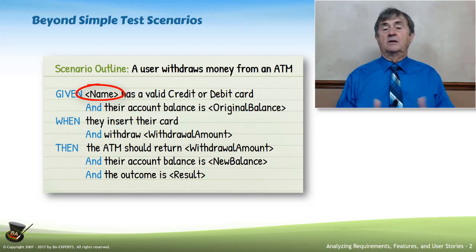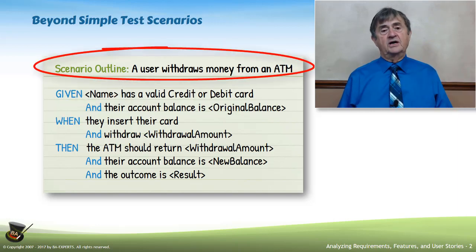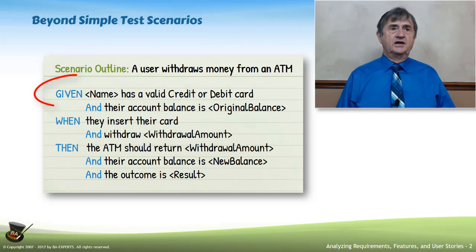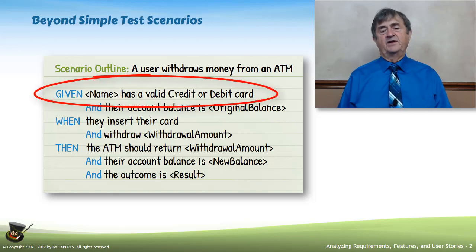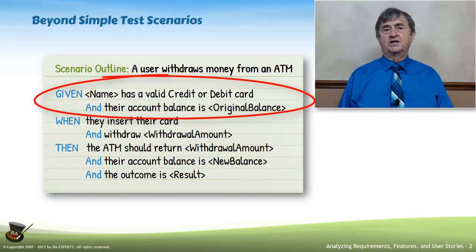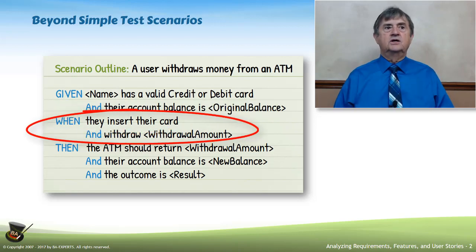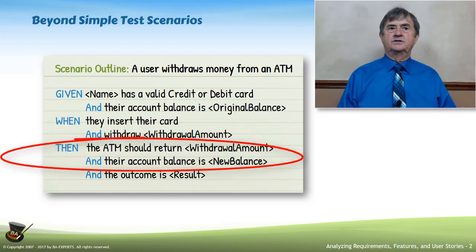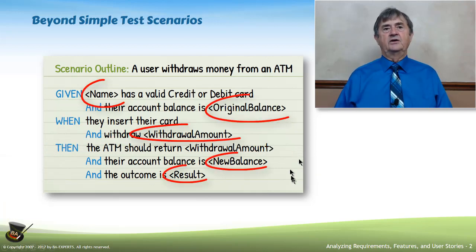So instead of talking about Fred, we would talk about 'student.' And then we could have, in an example table, a bunch of students — each with different criteria that test different dimensions of the application. A very common scenario outline most people can relate to: a user withdraws money from an ATM. Given <name> has a valid credit or debit card and their account balance is <original_balance>. When they insert their card and withdraw <withdrawal_amount>, then the ATM should return <withdrawal_amount> and their account balance is <new_balance>. The outcome is whatever is displayed on the screen.